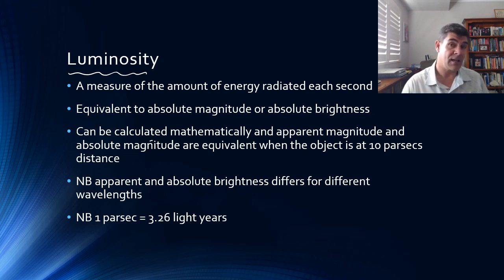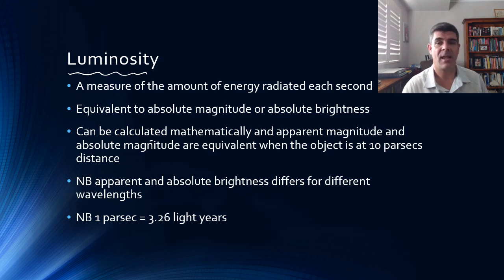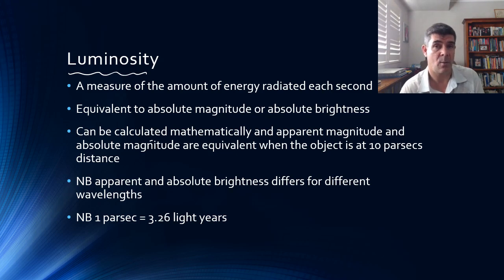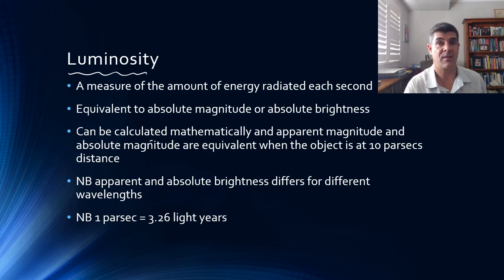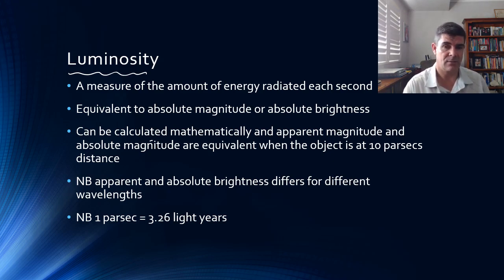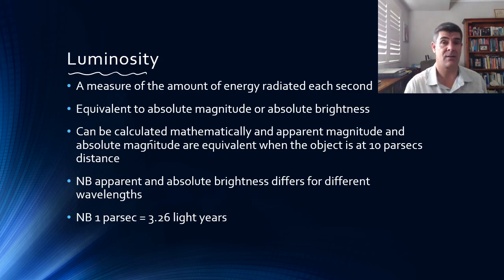But stars will release electromagnetic radiation outside of the visible spectrum. Therefore, something that has a high absolute magnitude at one particular wavelength, say red light, may not be the same for infrared, or blue, or ultraviolet. We have to recognize that stars are releasing electromagnetic radiation at a range of different frequencies.